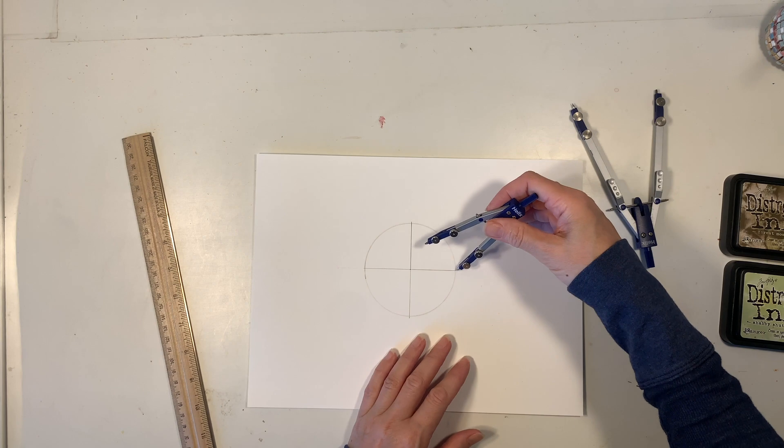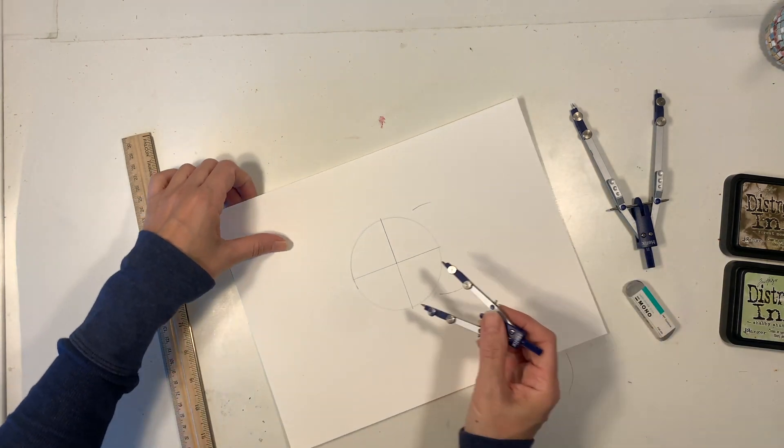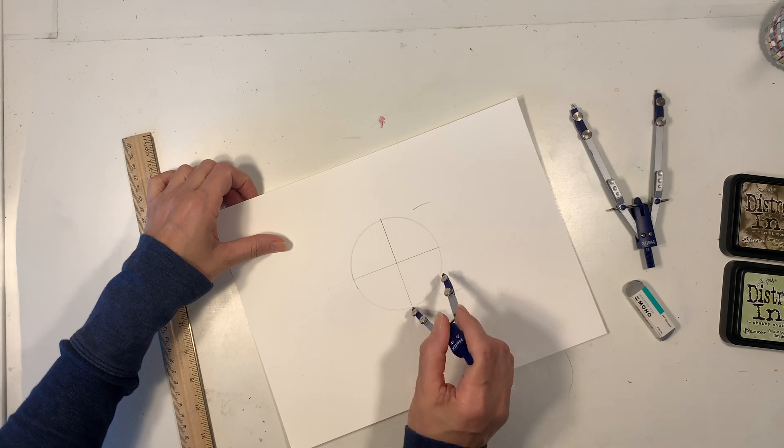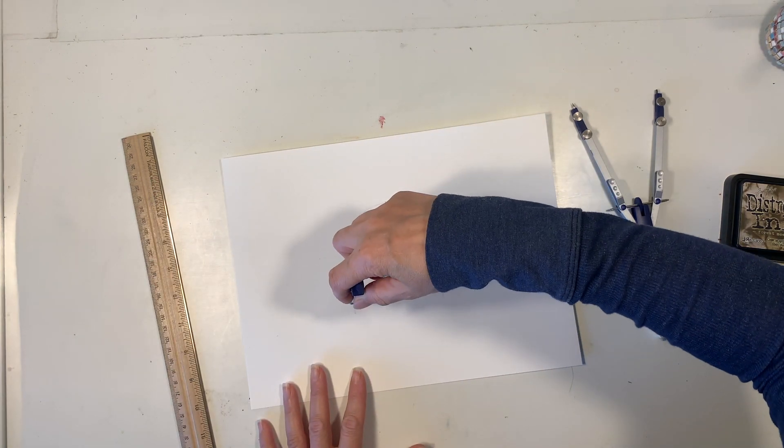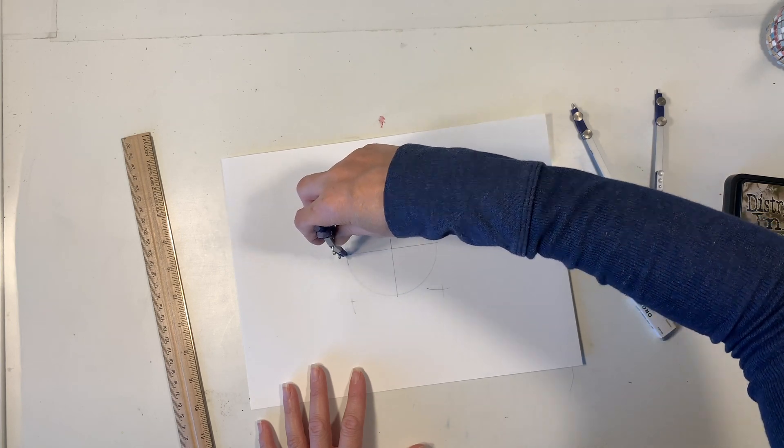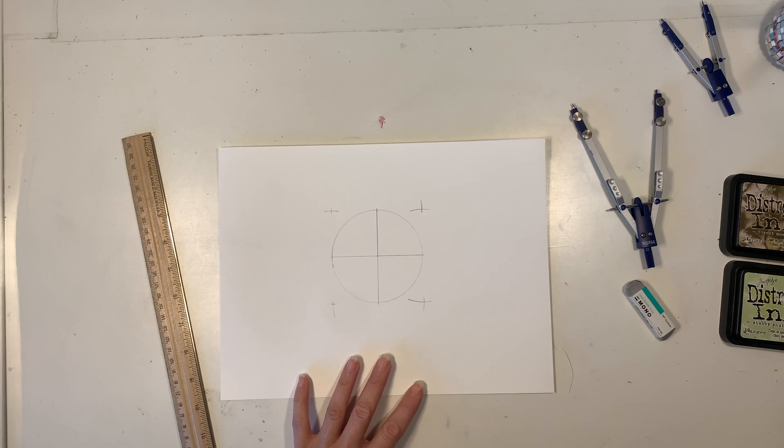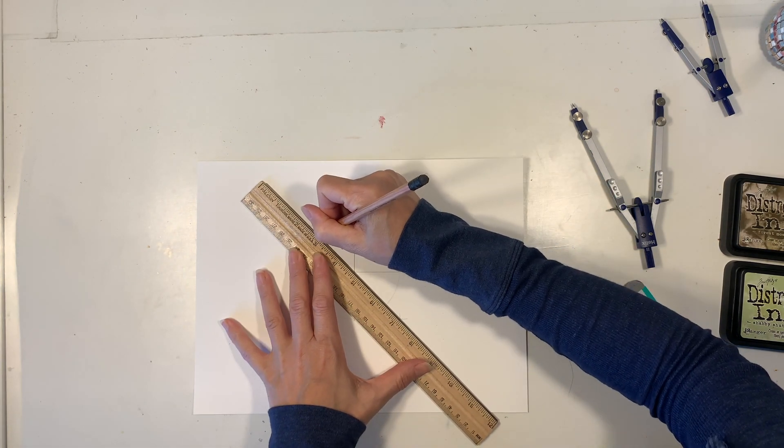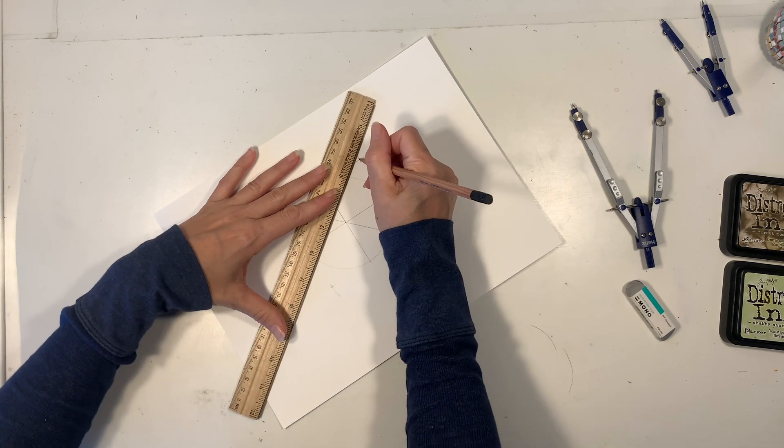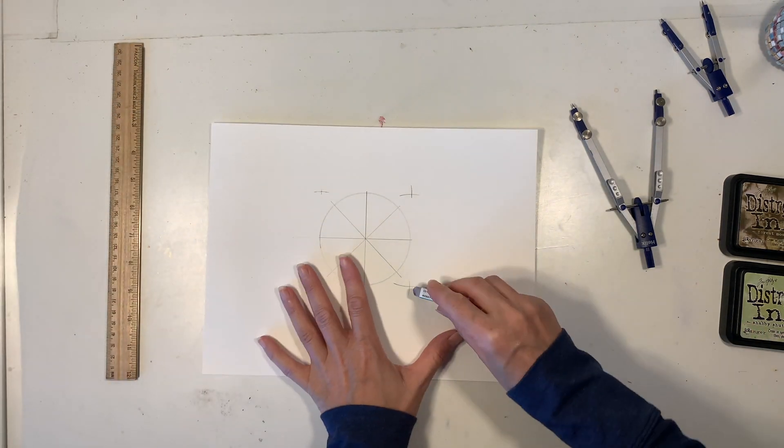Next, we're going to readjust our compass so that it has the same radius as our circle, and at each of those 4 points, we're going to draw 2 arcs on the outside of the circle, where each of those 2 arcs cross is going to be a new point in which we can take our ruler, connect those 2 points, and then draw a line straight through the center of our circle, and in this way, we will have divided our circle into 8 equal parts.